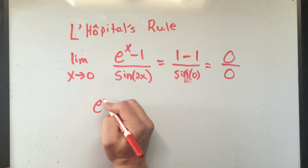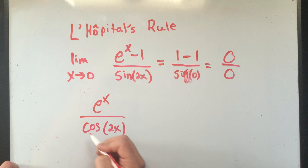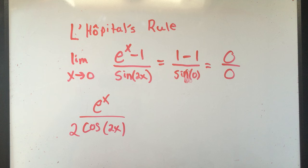So I take the derivative of the top - the derivative of e to the x is e to the x, the derivative of 1 is 0. The derivative on the bottom - the derivative of sine is cosine of the inside, but by the chain rule I need to multiply by 2. Now I try the limit again. If I plug in 0 on the top, I get 1. On the bottom, if I plug in 0, cosine of 0 is 1, so the answer is 1 half.